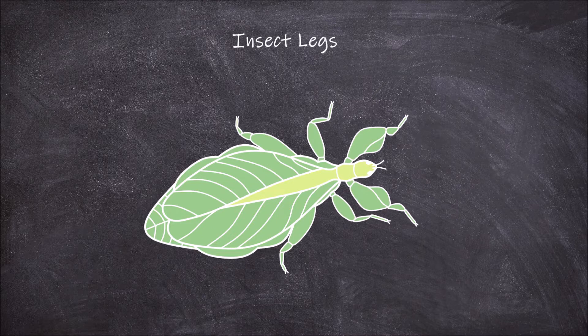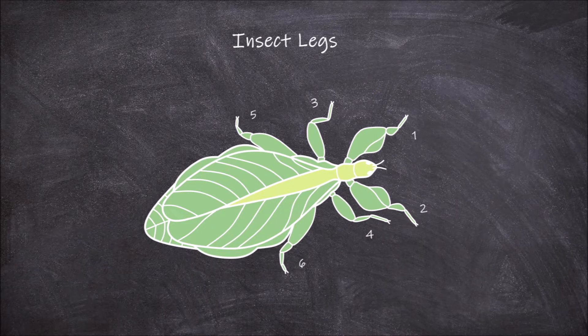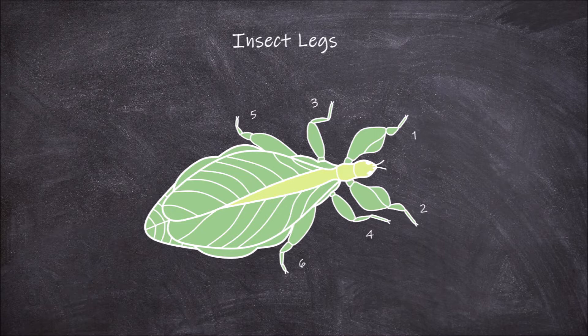Adult insects generally have 3 pairs of legs, so 6 in total. One pair attaches to each of the 3 thoracic segments that make up the insect thorax.